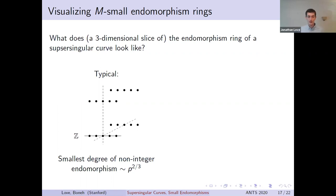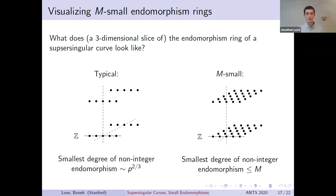This means that the endomorphism lattice will have one direction of very tightly packed elements, namely the integers, whereas if you go in any other direction, the endomorphisms are extremely sparse. In contrast, the m-small supersingular curves have two dimensions worth of relatively short endomorphisms.